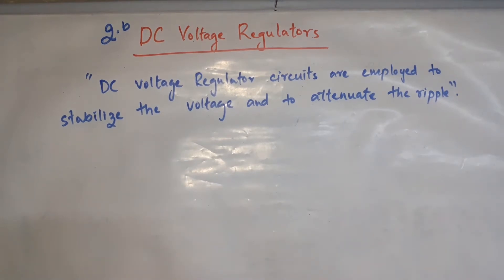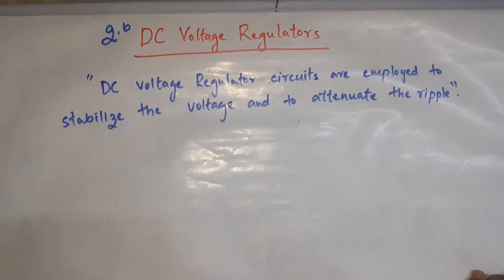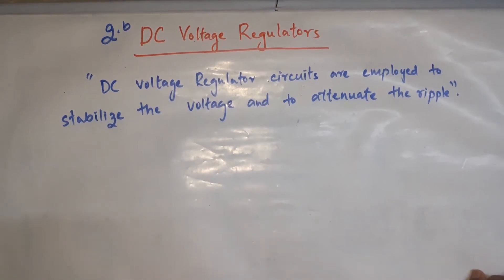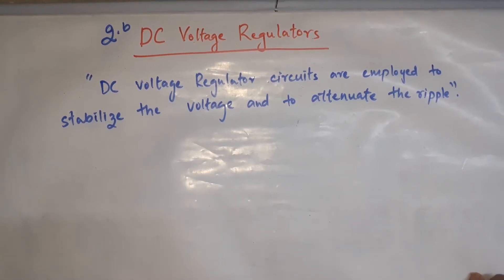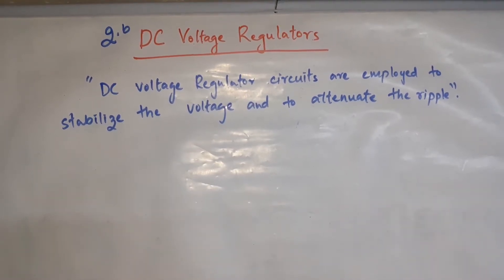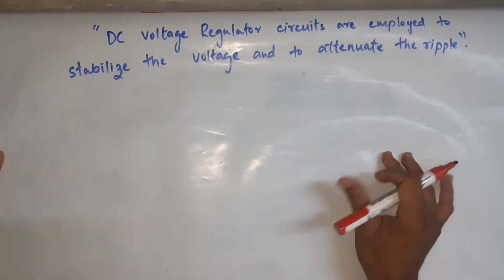One very important element that plays a role in a voltage regulator is the zener diode. You might have remembered from your basics — from EC2 or first year — where you learned that zener diodes are used for stabilizing or maintaining a constant voltage. Here also we will be using zener diodes, transistors, and op-amps.